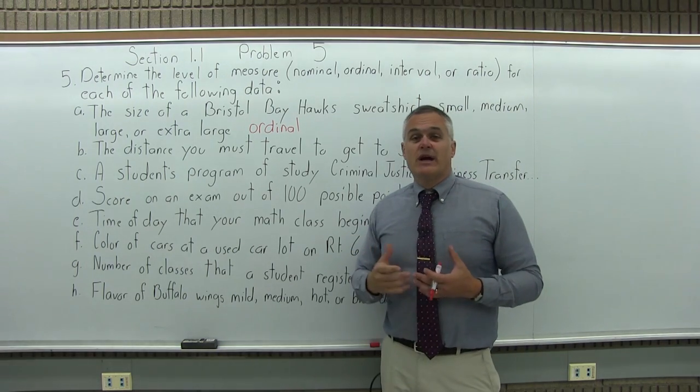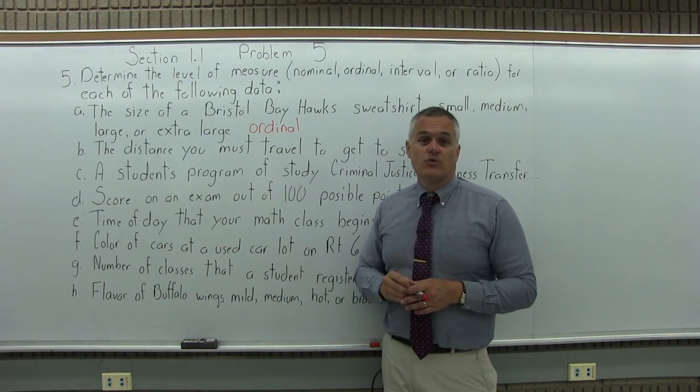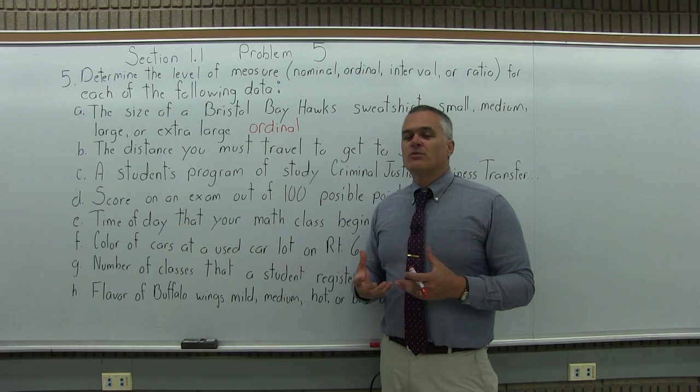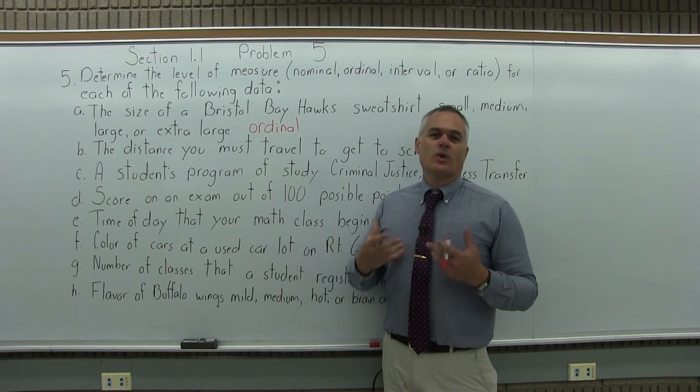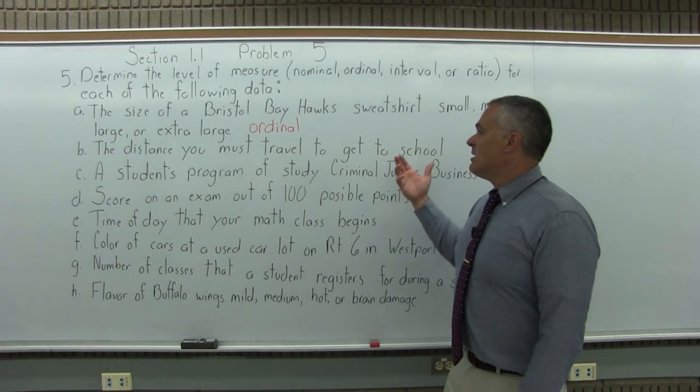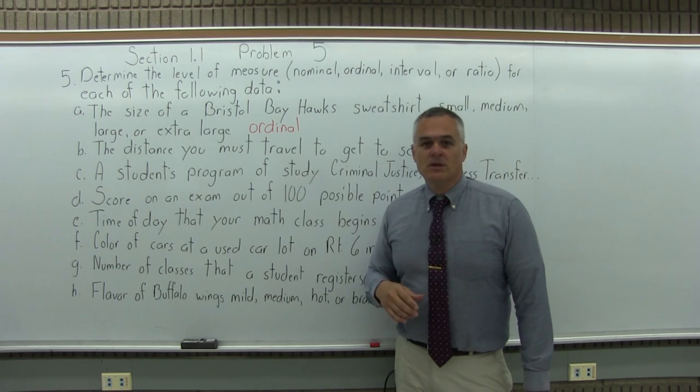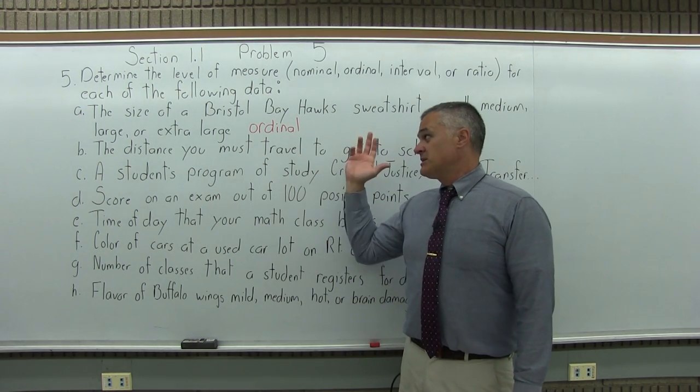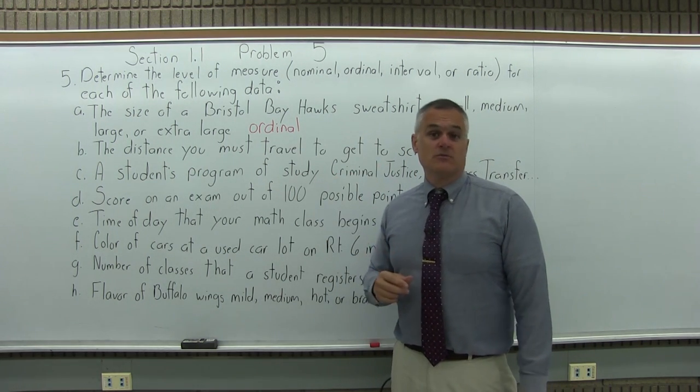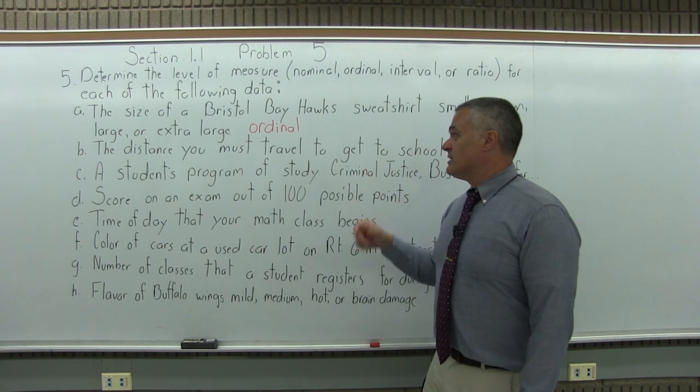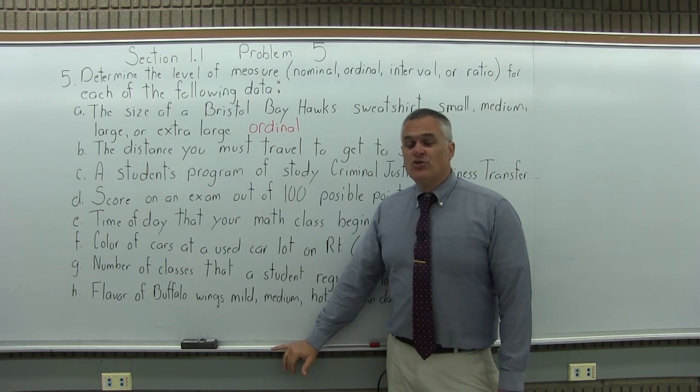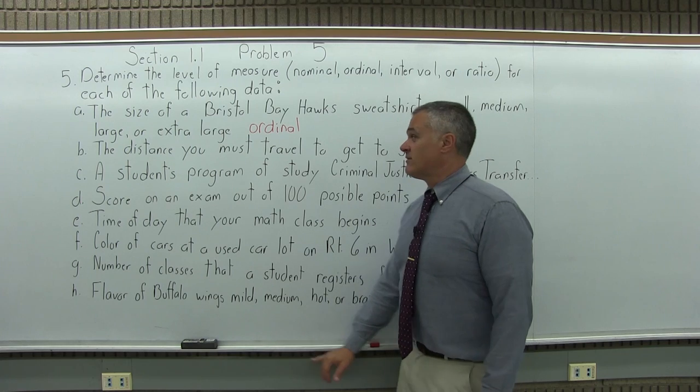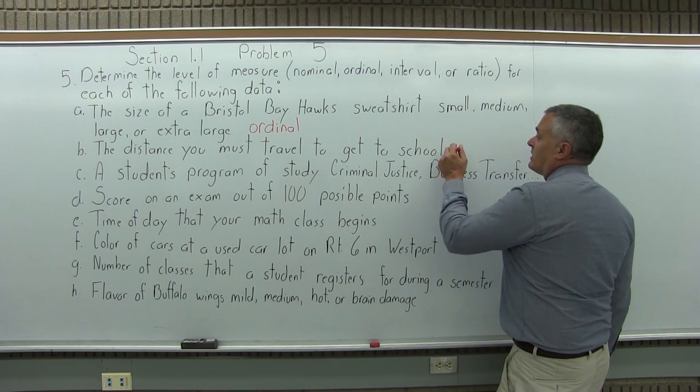And with numbers, you have to decide, do you have a sensible ratio? That means if a number is twice as big, is it measuring twice as much of something? So what possible distances might you have to drive to get to school? Let's say one student drives 10 miles and another student drives 20 miles. Those are reasonable answers, and 20 is twice as big as 10. Do you get twice as much of something? You do. Twice the distance you travel to get to school. So it would make it ratio.